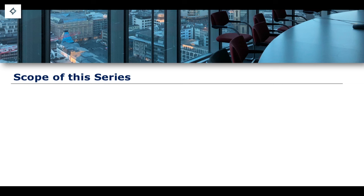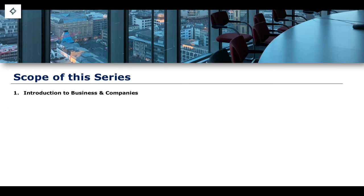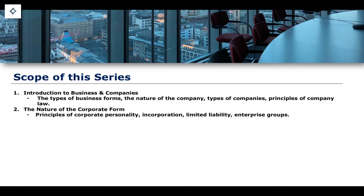Let's talk about the scope of this series of lessons. Because we're doing company law, this is going to be an examination of the law relating to the regulation and legal operation of a corporation. We're going to divide this into six main sections. The first section is a general introduction to business and company law, covering types of business form, the nature of the company, different types of company, and the various principles of company law. The second section will take those principles - such as corporate personality, separate corporate personality, incorporation, and limited liability - and examine the consequences of those principles, including the expression of corporate groups, group structures, and enterprise groups.